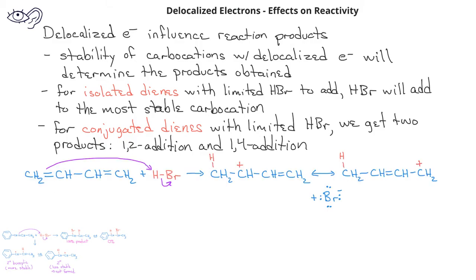In this reaction, one pair of pi electrons are donated to the hydrogen, and that hydrogen will be added to the carbon on the far left end. This results in a carbocation in a secondary position. That secondary carbocation can be stabilized by having the second pair of pi electrons donated to the carbon-carbon bond in the middle, which shifts the carbocation to the carbon all the way to the right. We now have two different carbocations for the bromide ion to add to: it can add to the secondary carbocation or to the primary carbocation. In fact, we will get some of both.